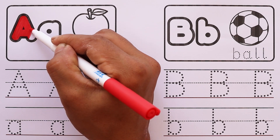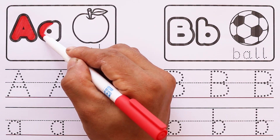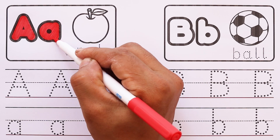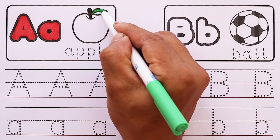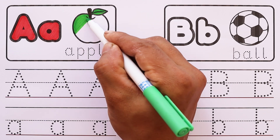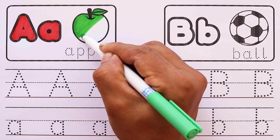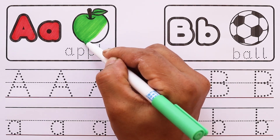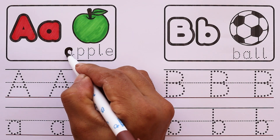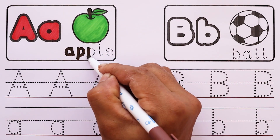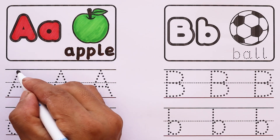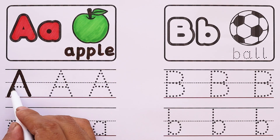Capital letter A, small letter A. Brown color, green color. Apple — A, P, P, L, E — apple. Capital letter A.